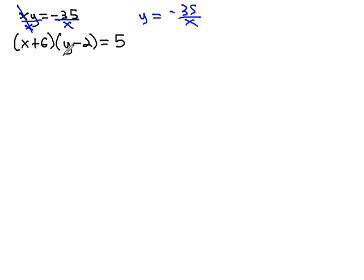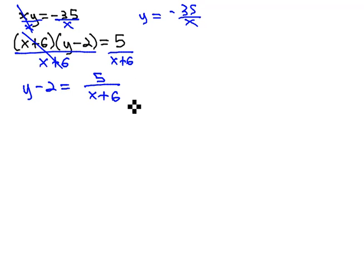In the second equation, the factor with x is x plus 6, so we're going to divide by that factor on both sides. That gives us y minus 2 equals 5 over x plus 6.